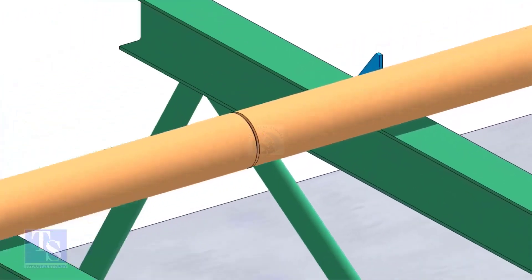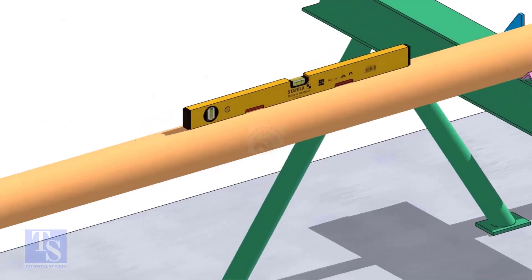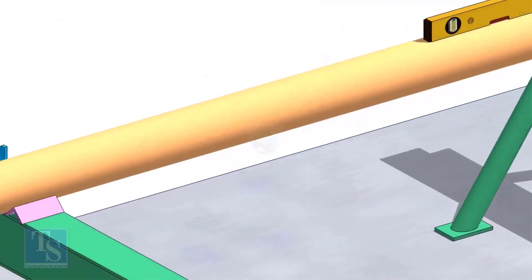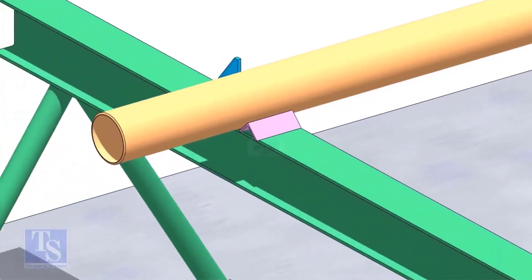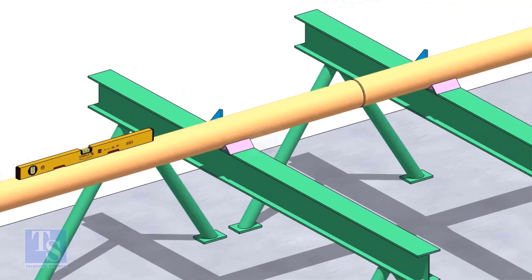You can cross-check the level of the pipes. Arrest the pipes from the other side using wedges or angle stubs.